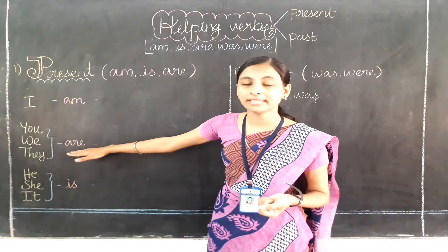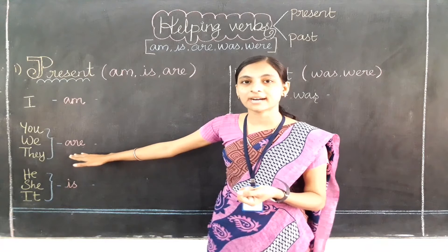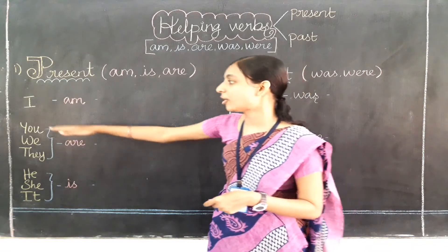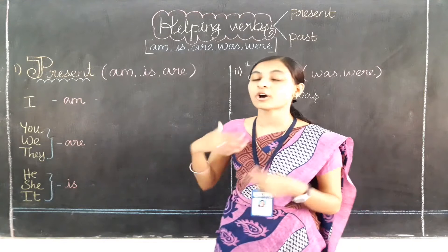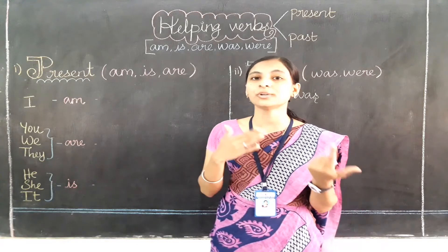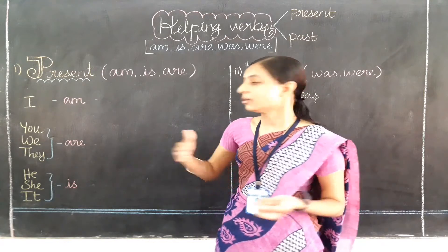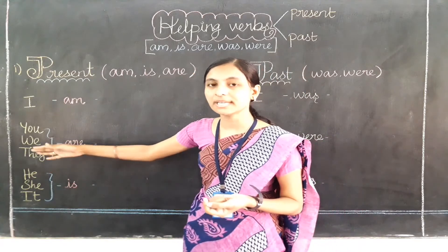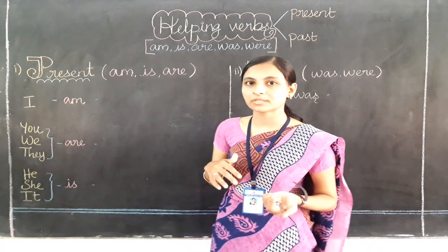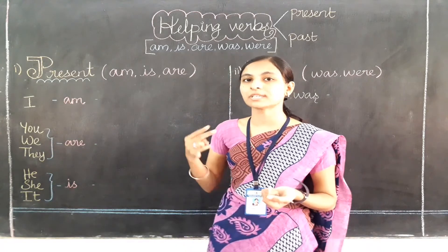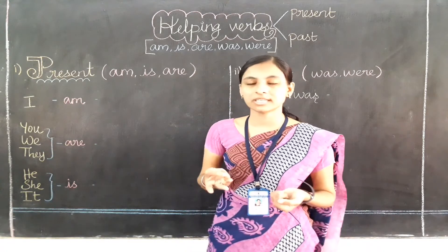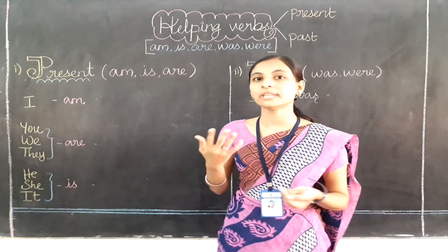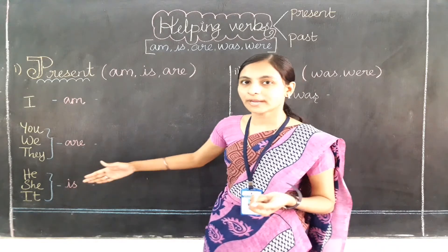'Are' can be used for plural pronouns as well as plural names — two or more names. For example, when you are talking about you, we, or they, or two names together, you use 'are'.